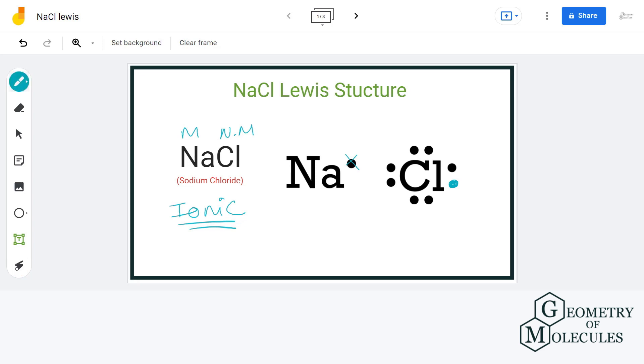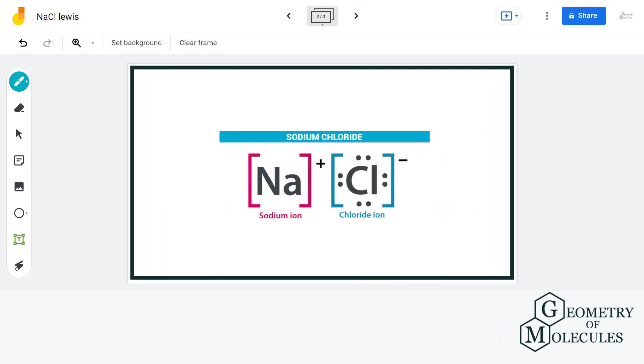This way, sodium will gain a plus one charge by donating one electron to the chlorine atom, and the chlorine atom will gain a minus one charge and complete its octet by accepting the electron. This is the Lewis dot structure of NaCl.